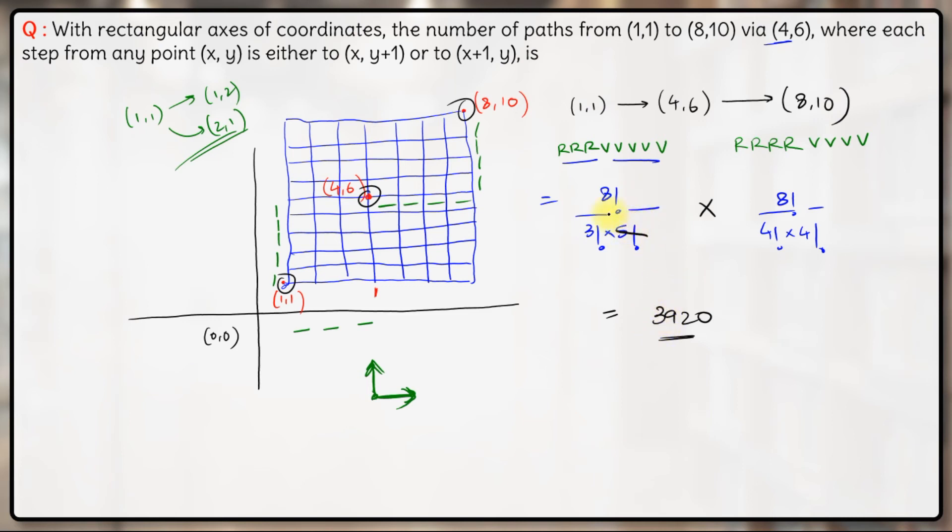How do we simplify? Simple. 5 factorial from 8 factorial, this will give us 8 into 7 into 6. 8 factorial divided by 4 factorial, the remaining will be 8 into 7 into 6 into 5. 3 factorial is 6, 6 gets cancelled out. 4 factorial is 24, so 6 into 4 gives 24. 4 from 8 gives 2. So you are left with 8 into 7 into 2 into 7 into 5, this will give you 3920.